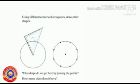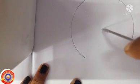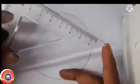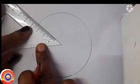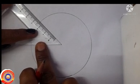See this activity. Using different corners of set square, draw other shapes. What shape do we get here by joining the points? How many sides does it have? At first, we have to draw a circle. Take the measure 4 cm in a compass, then draw a circle of radius 4 cm. Then mark its center. Take set square number 1. This set square has two slanting corners. We have to use one of these corners to draw this figure. Place the slanting corner of the set square at the center of the circle, then mark the points where the two edges of the set square meet the circle.